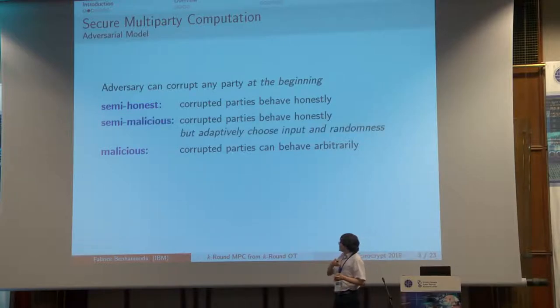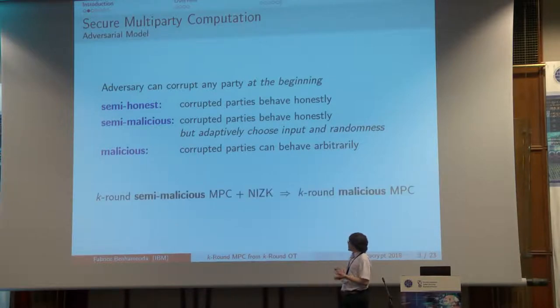In the middle, you have the lesser-known covert security setting, where corrupted parties must follow the protocol but can choose the input and randomness adaptively. This is very interesting because you can transform in this setting every protocol into a malicious one just by adding zero-knowledge proofs, and this transformation preserves round complexity. That's right for our initial question on round complexity of MPC.